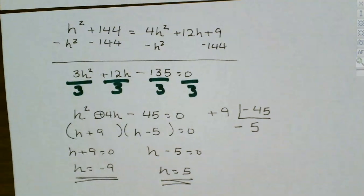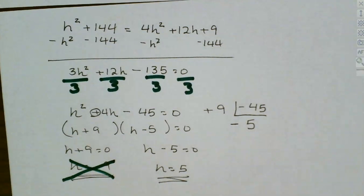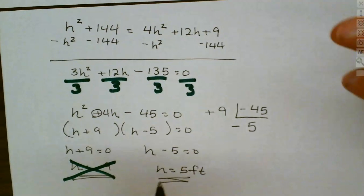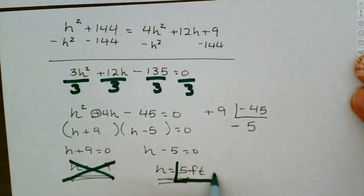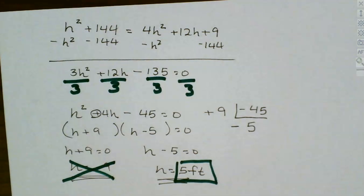Which solution is not legitimate? Negative 9 — we cannot have a negative height or width. So we discard it. The answer is in feet, and we want the height of the dock, so h equals 5 feet. That one took a bit longer because we had to FOIL, set it to zero, and factor. So far we've covered the Pythagorean theorem, geometric figure questions with the square, and consecutive integers.